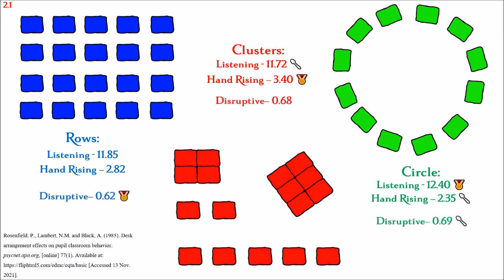And then we have two negative behaviors. The first we'll be exploring is disruptive behavior. Rows scored 0.62, clusters scored 0.68, and circle scored 0.69. The best layout for reducing disruptive behavior was rows, while the worst was circle.